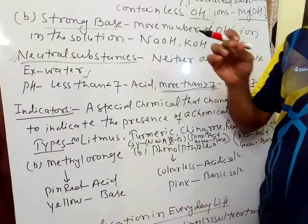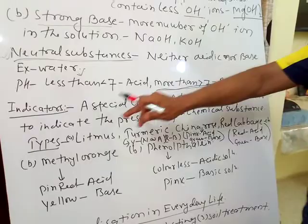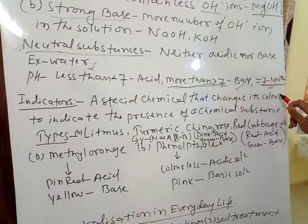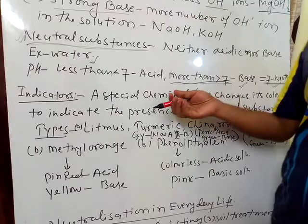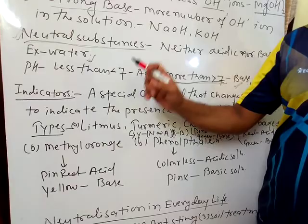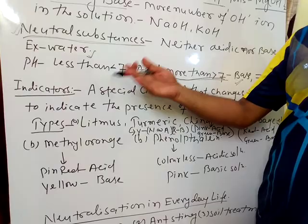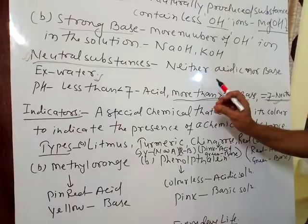Now I am going to the indicator. An indicator is a special chemical that changes its color to indicate the presence of chemical substances. It tells us the nature of the substance — whether the substance is acidic or basic in nature. Such substances are known as indicators.